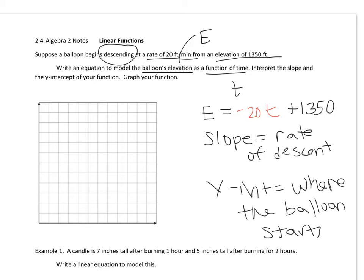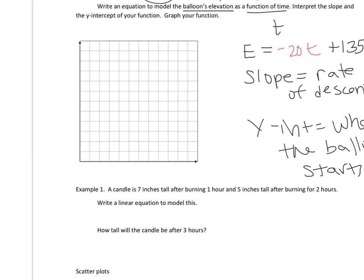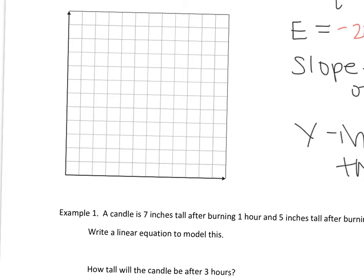Now let's graph the function. This is going to be in the first quadrant because we're not talking about negative time. T is going to go across the horizontal axis, and the elevation or height is on the vertical axis, because elevation is the dependent variable and time is the independent variable.